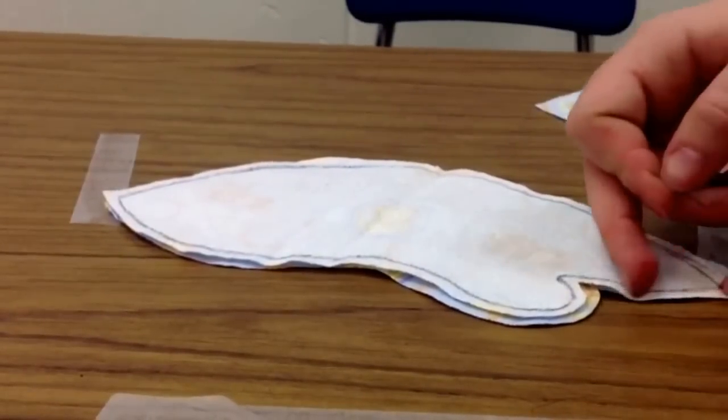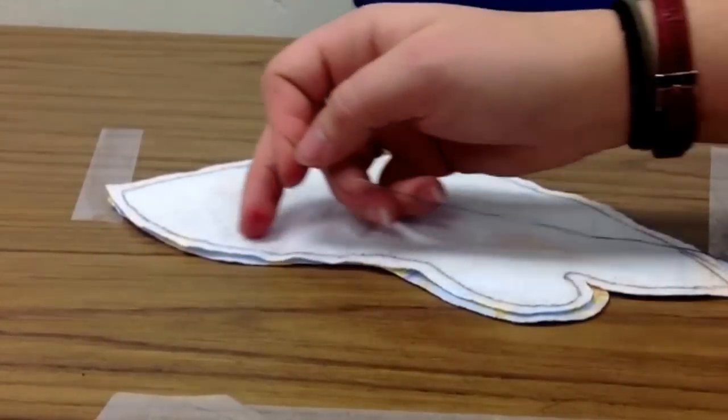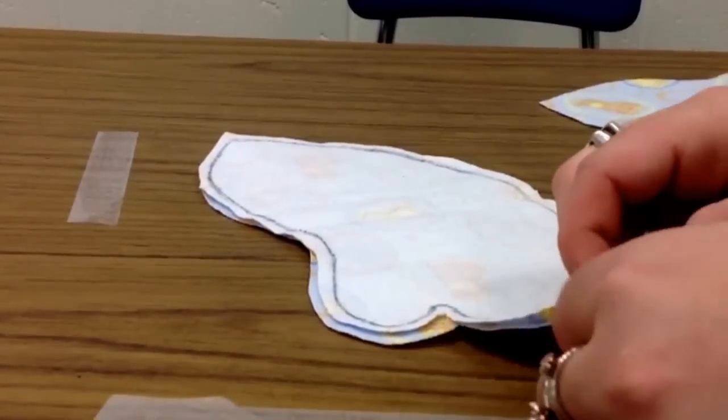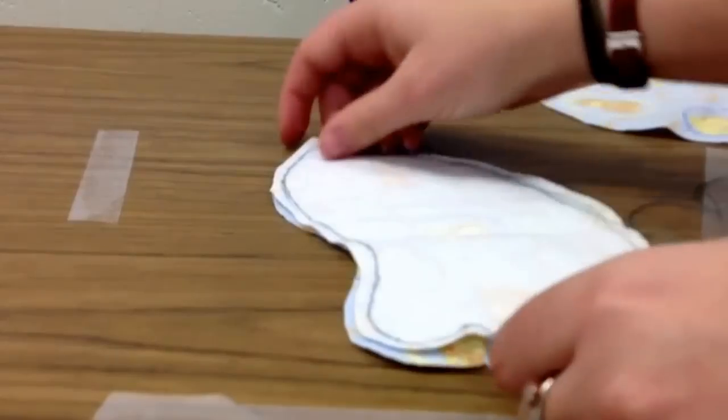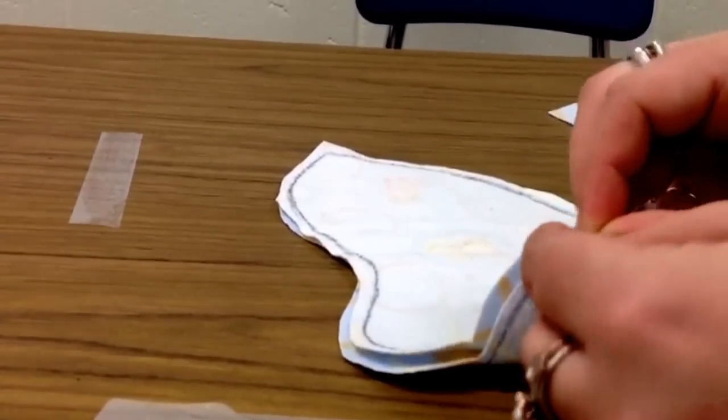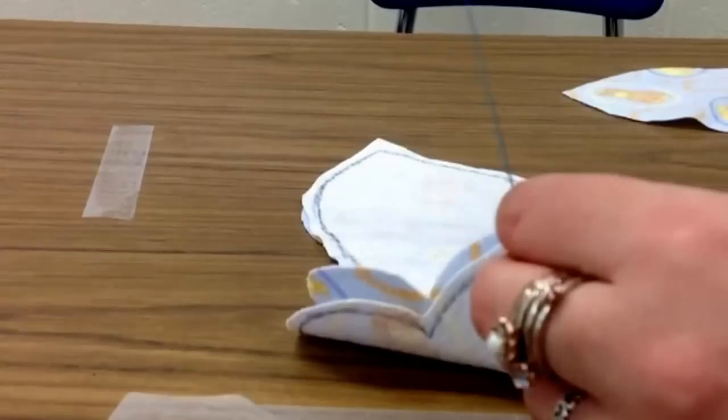And we are going to just sew along the line that we drew. So starting at, we can start at the front. It doesn't really matter which side you start at, but you start at the front. And we're going to put our needle through and pull tight.